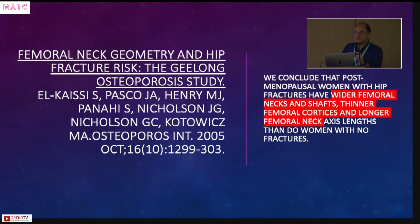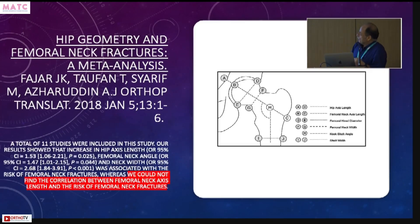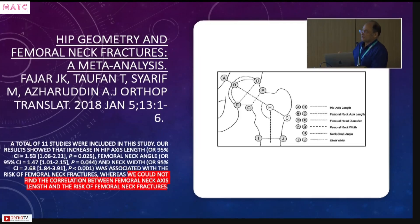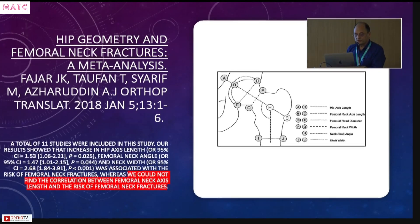As osteoporosis develops, there is thinning of the cortex, a wider neck, and the neck shaft angle probably may be a more important predictor of fracture. The hip axis length — measured from the pelvic brim to just below the lateral tubercle — is more important as a predictor, rather than the pure femoral neck length, which is measured from the femoral head to the lateral part of the trochanter.